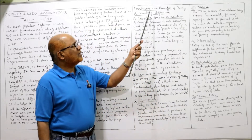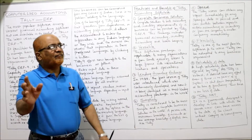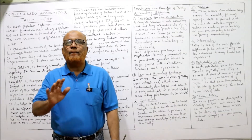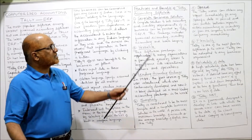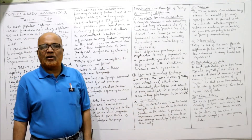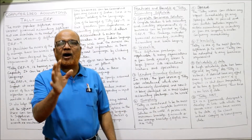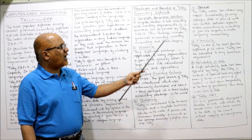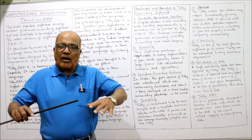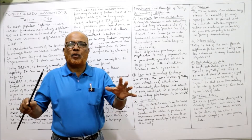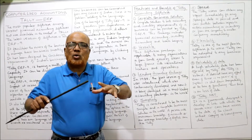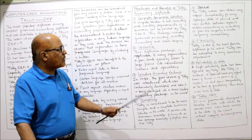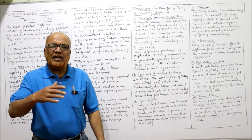The first major feature of Tally accounting software is that it is a complete business solution. It provides a complete solution to both accounting and inventory requirements of an organization. Tally ERP 9 includes financial accounting, inventory accounting, and bookkeeping, making it a comprehensive, wholesome accounting solution.